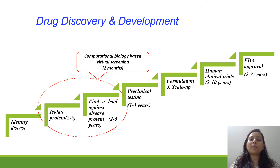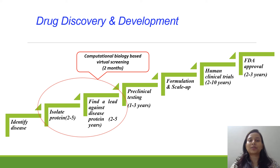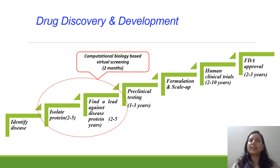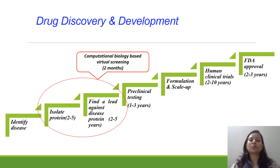When we apply computational biology-based virtual screening, we apply it specifically to protein isolation and finding the correct lead molecule. Using this approach, we can reduce the time from two to five years down to two months. In this virtual screening, we apply molecular docking. We isolate our protein and find a list of candidate molecules from databases such as PubChem, ChEMBL, and for phytochemicals, databases like IMPPAT and Dr. Duke. After optimizing these compounds, we check interactions using molecular docking.